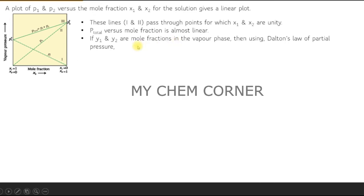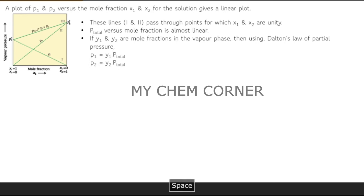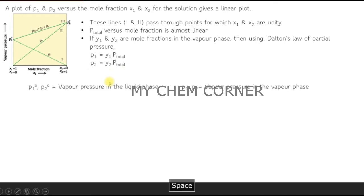If y1 and y2 are mole fractions in the vapor phase, then by Dalton's Law of partial pressure: p1 = y1 × p-total, and p2 = y2 × p-total. Here y1 and y2 are the mole fractions when the solution is in the vapor phase.